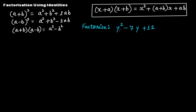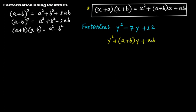Now let's take the expression y squared minus 7y plus 12. You cannot use any of the three previous identities here. For example, (a − b) whole squared equals a squared plus b squared minus 2ab does not apply. So we have to rely on this identity and write it in the form y squared plus (a + b)y plus ab, where a plus b equals minus 7 and ab equals 12.